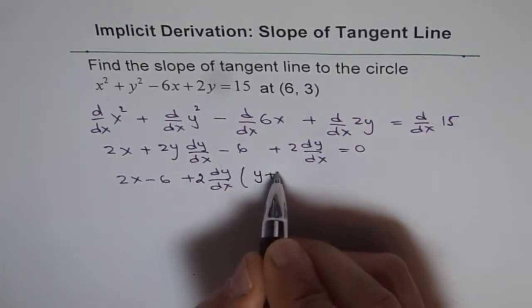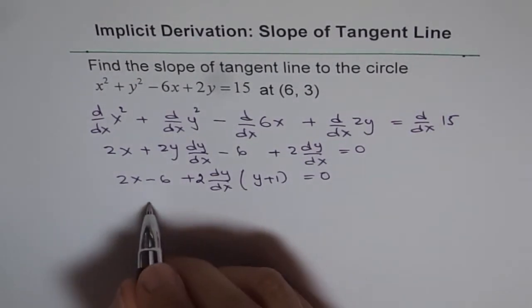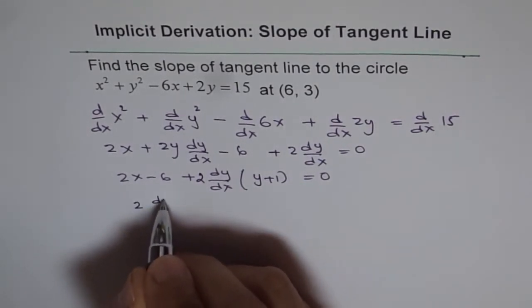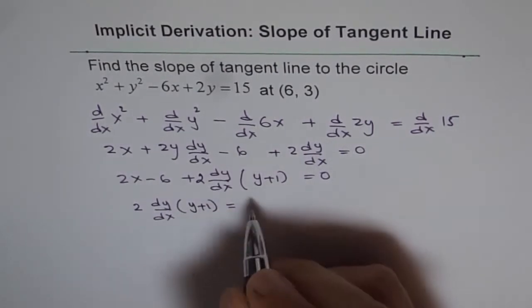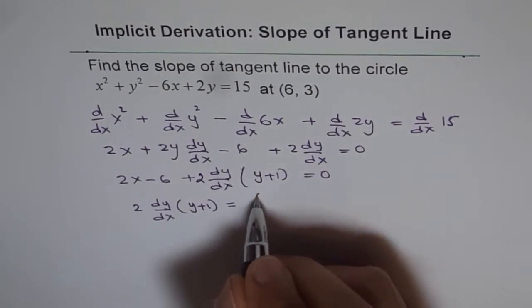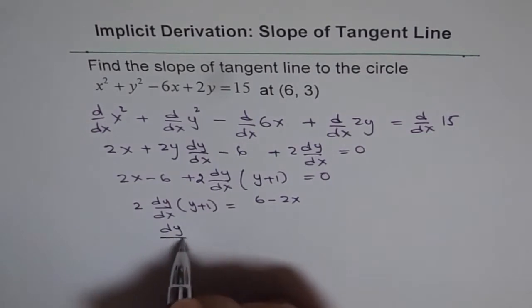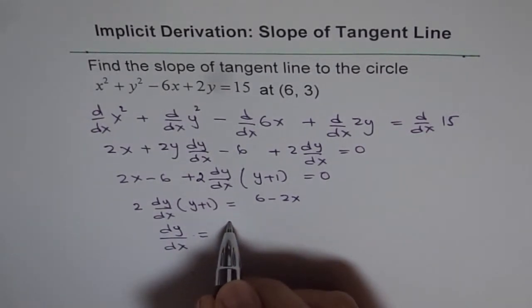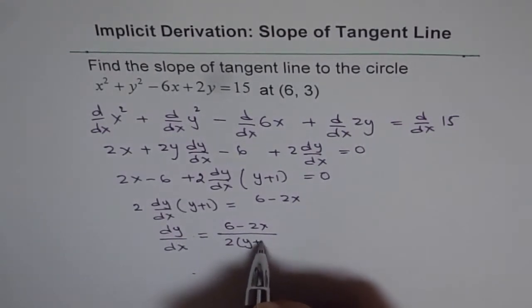We get y plus 1 equals 0. Or dy dx can be simplified: 2 times dy dx times y plus 1 equals 6 minus 2x. And dy dx equals 6 minus 2x over 2 times y plus 1.